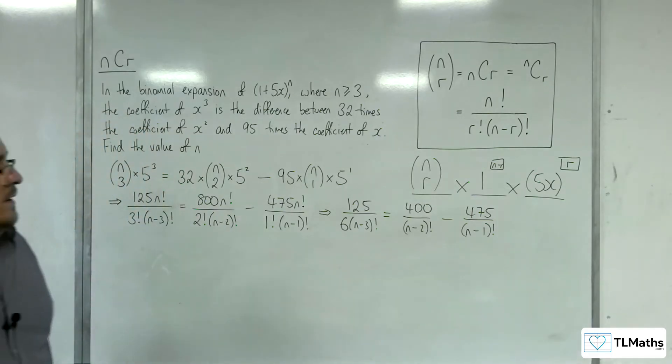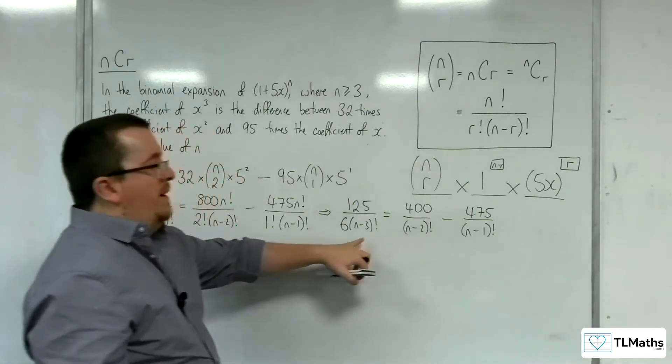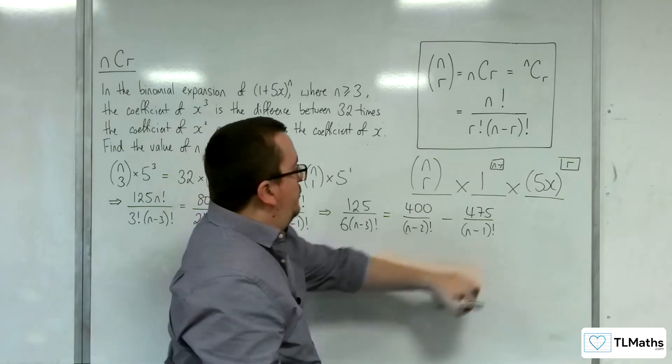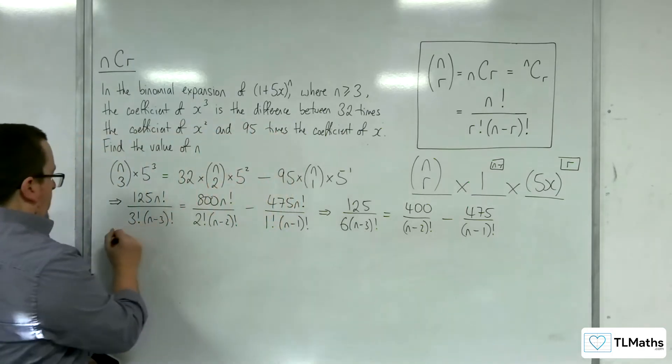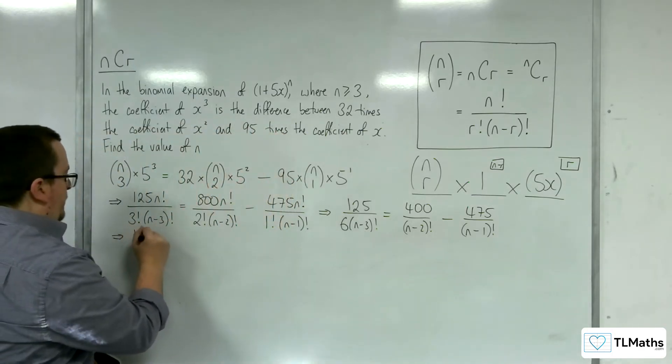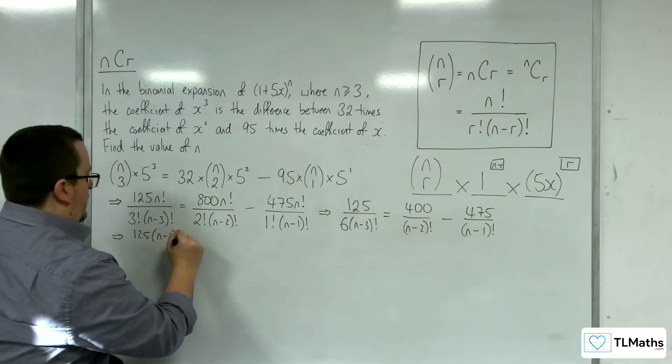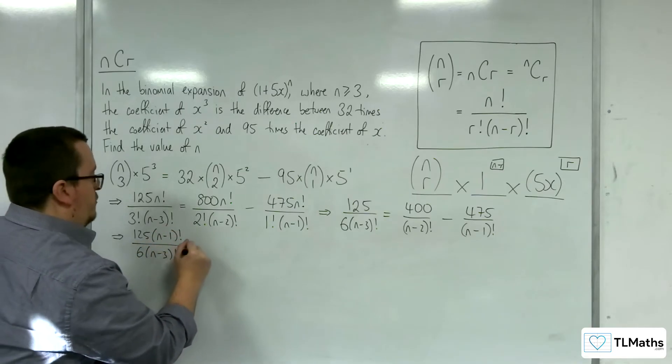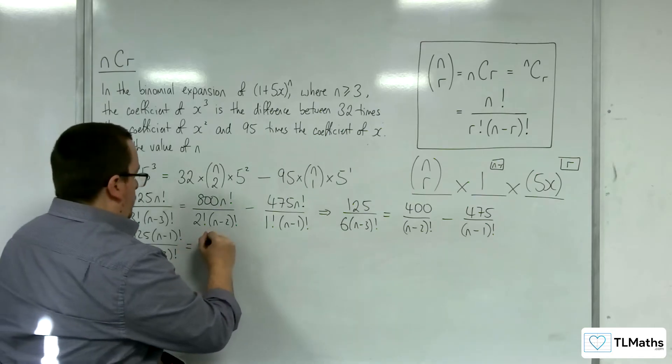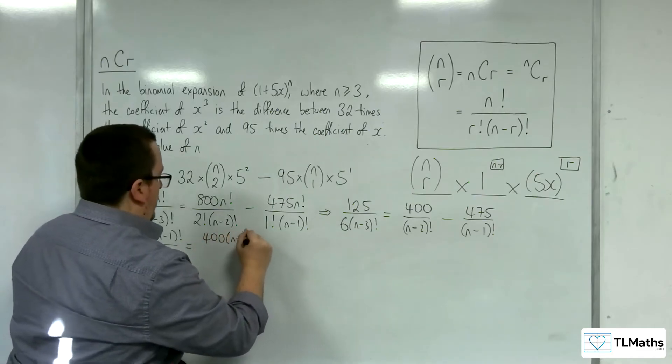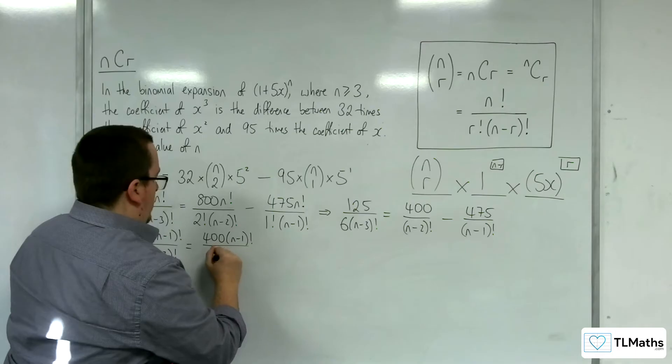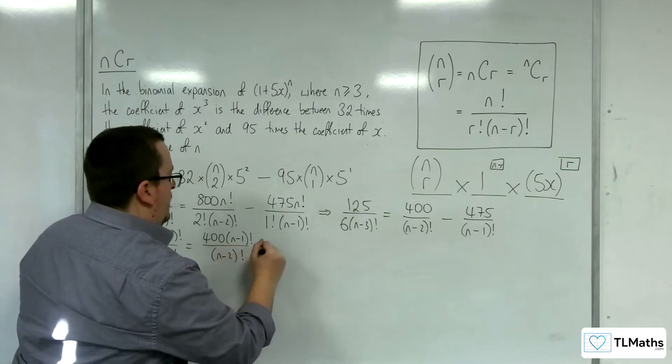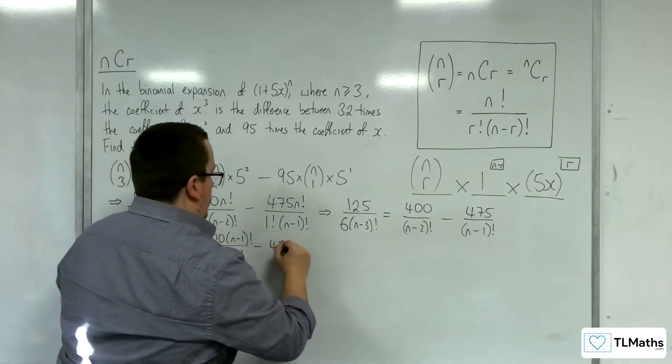Right, next up, multiply through by the largest factorial, which is the n minus 1 factorial. So we've got 125 n minus 1 factorial over n minus 3 factorial over 6, equals 400 n minus 1 factorial over n minus 2 factorial, take away 475.